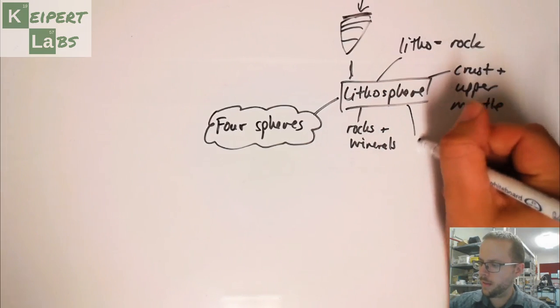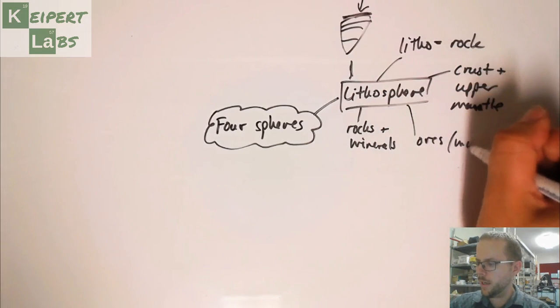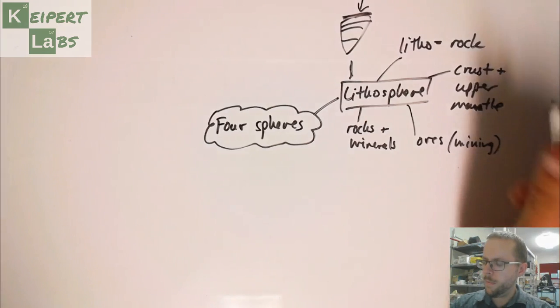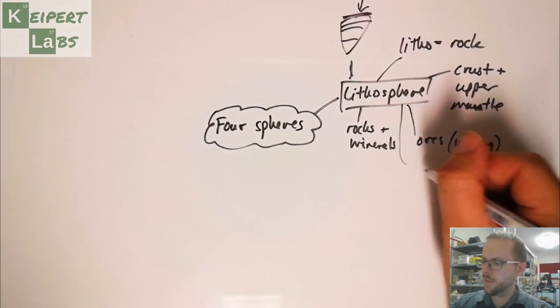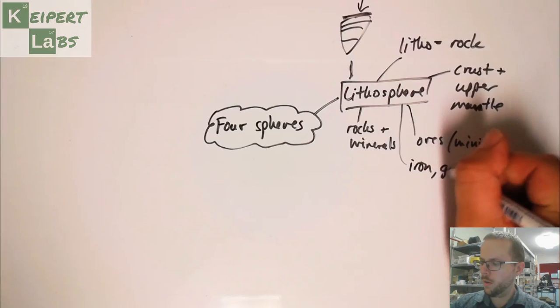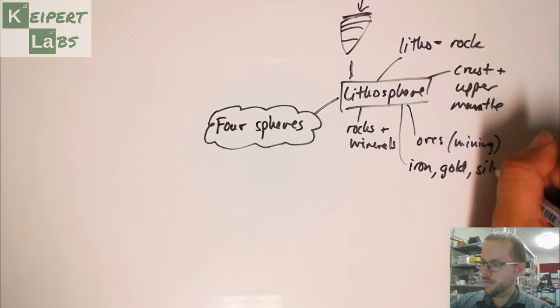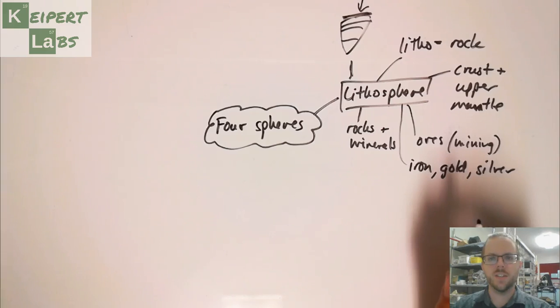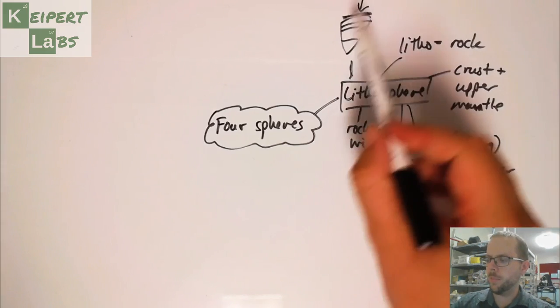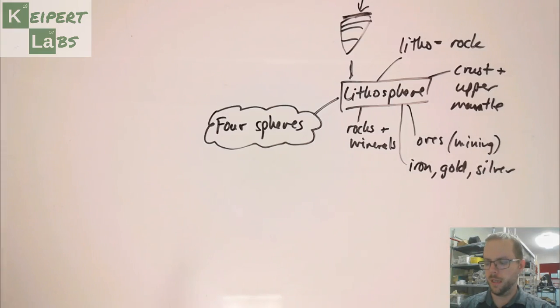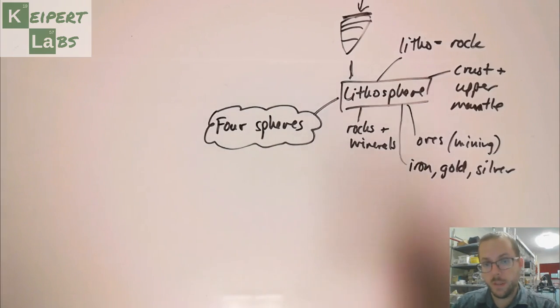We might also be thinking about things like ores for mining. We might be thinking about the sort of substances we can get like iron or gold or silver. There are all sorts of things that we might encounter and extract from the lithosphere. We're going to spend a lot of this topic focusing on the lithosphere because we're thinking about those plates on the outside of the earth having a significant impact.